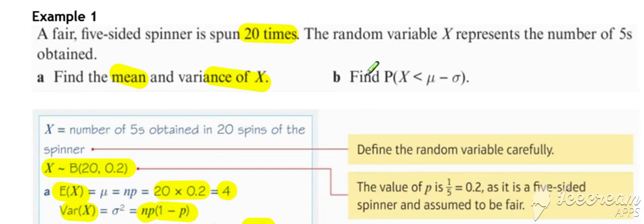And then we've been asked to work out a probability for that binomial that X is less than the mean minus the standard deviation. Remember for the standard deviation, it's the square root of the variance.